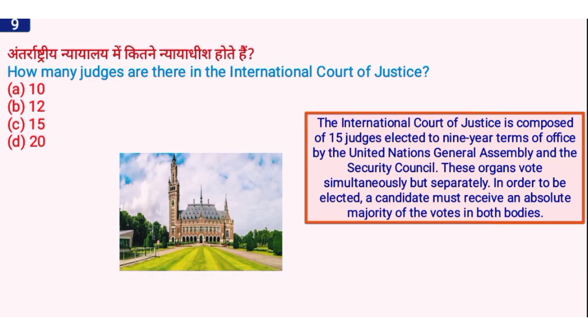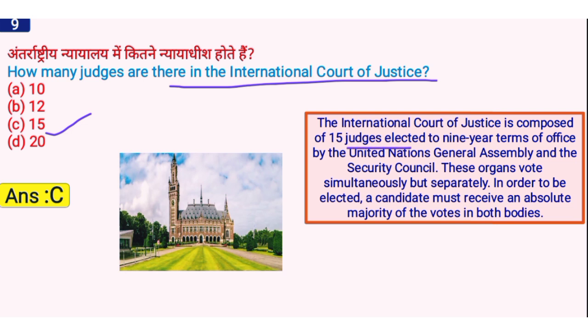How many judges are there in the International Court of Justice? The right answer is option C, 15. The International Court of Justice is composed of 15 judges elected to 9-year terms of office by the United Nations General Assembly and the Security Council, which vote simultaneously but separately. A candidate must receive an absolute majority of votes in both bodies.